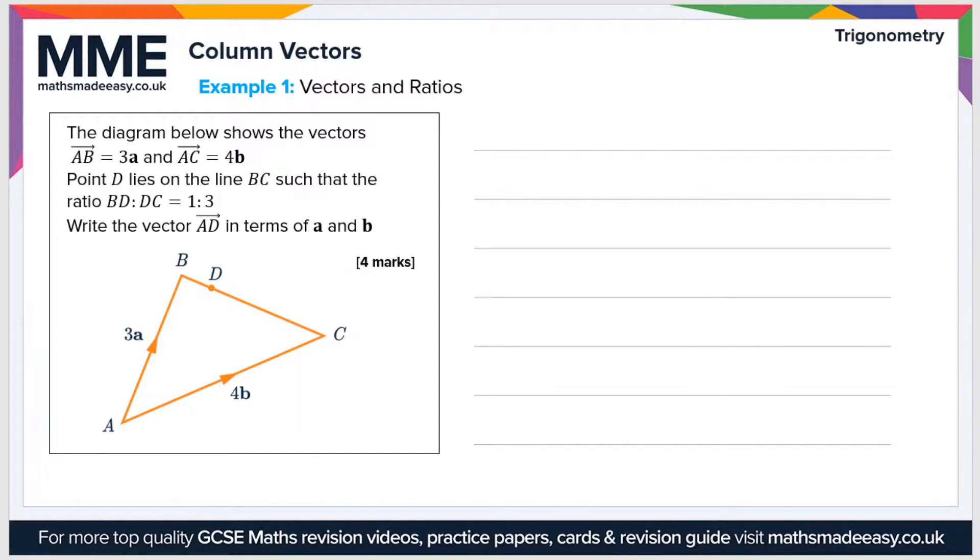Write the vector AD in terms of a and b. Well, there's a lot to take in here, but first of all the vector AD is this line here, so that's what we're trying to calculate in this question. Now to get AD we can go from A to B and then B to D.